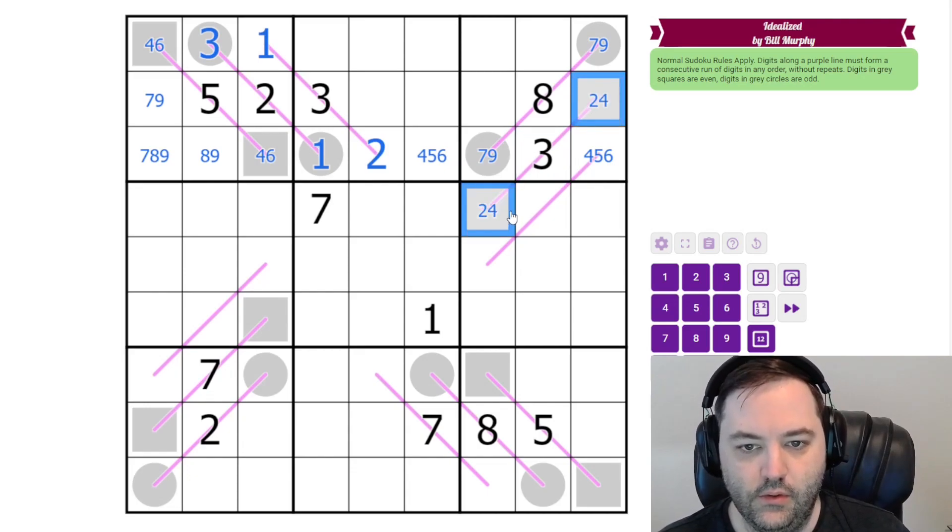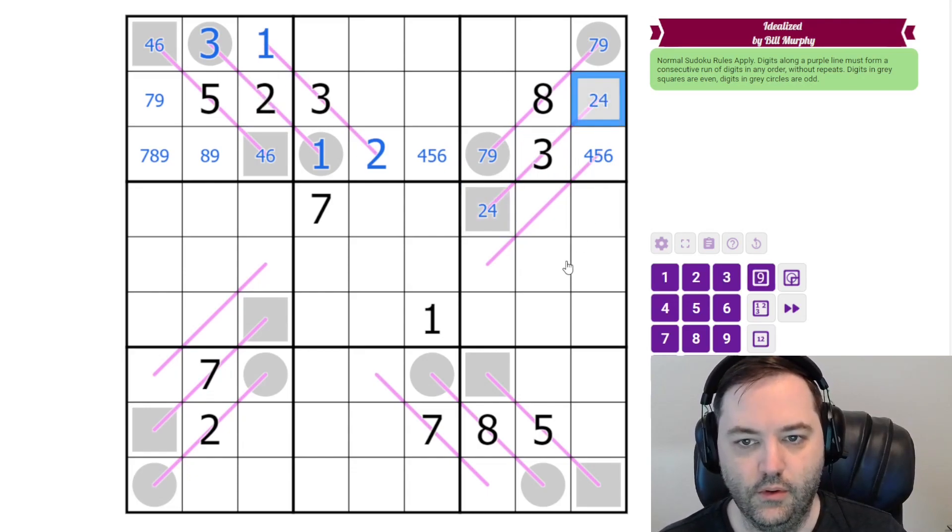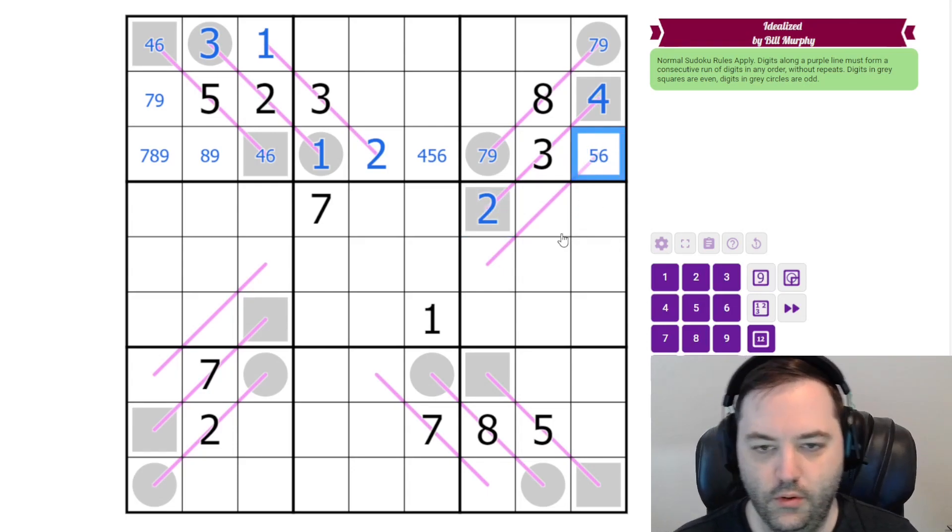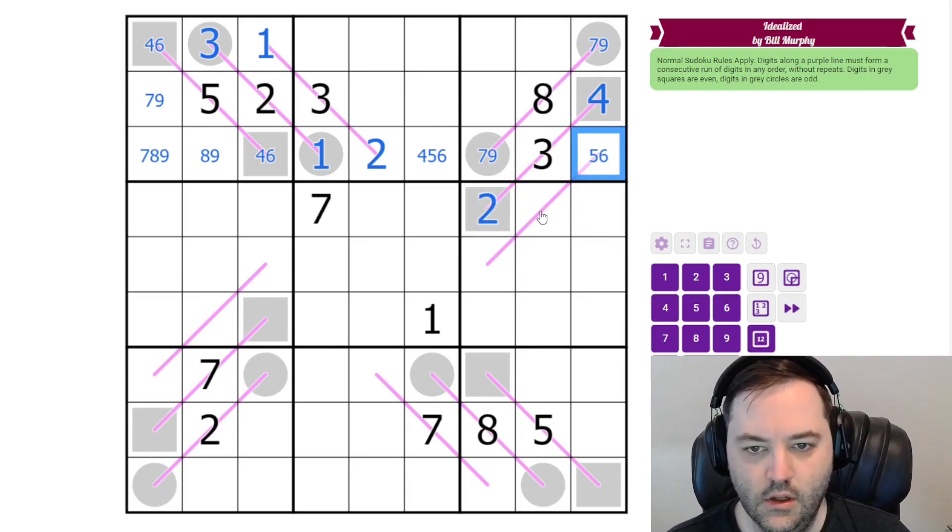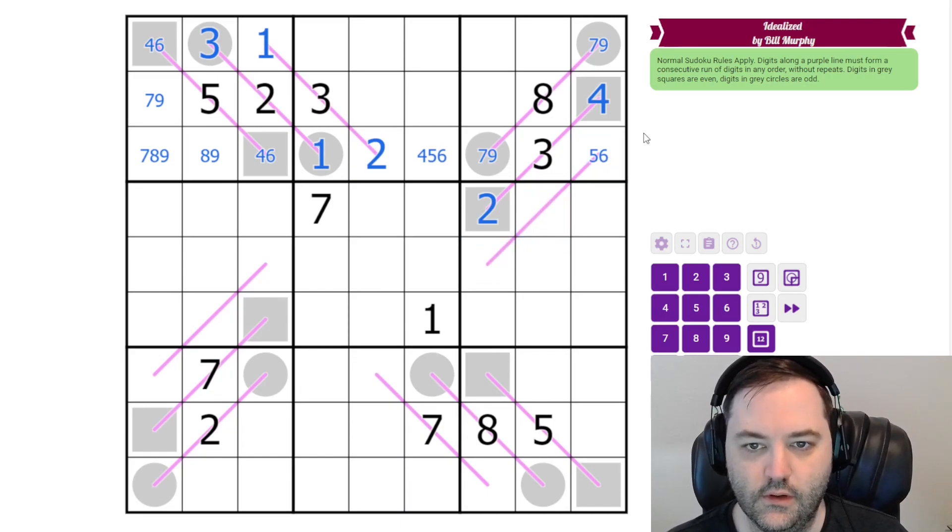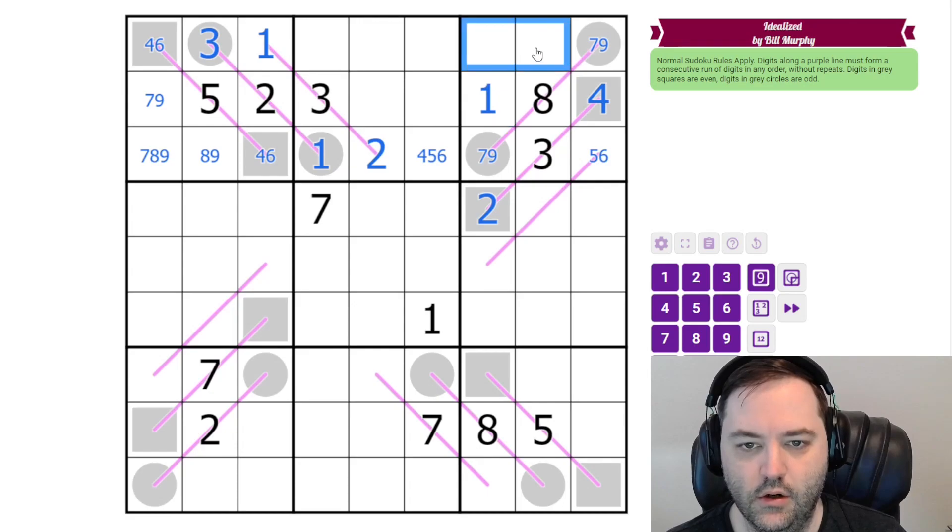Three needs to be surrounded by two and four. We have a two in the row. So that's four. That's two. So this is no longer four. And these digits are going to have to be consecutive with a five or a six. We'll worry about that later. One needs to go in this box somewhere. So it has to go here. And we're left with two, five, and six in the box. But we have a two here. So this is five or six.